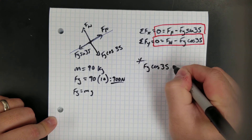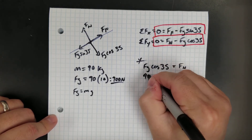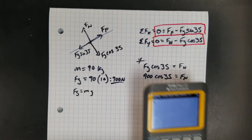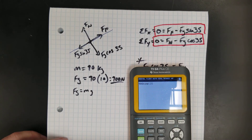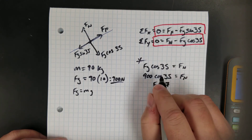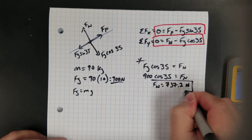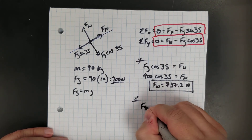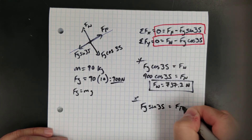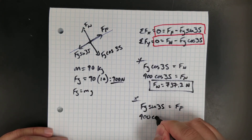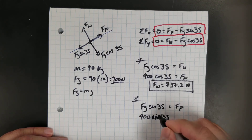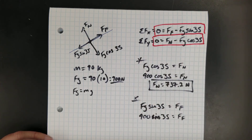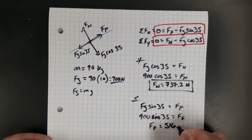The skier's mass is 90 kilograms. So FG is 90 times 10, equaling 900 newtons. Let's do the Y equation first. Rearranging gives FG cosine 35 equals FN. So 900 cosine 35 equals FN. Doing that on the calculator: 900 cosine 35 equals 737.23, so the normal force is 737.2 newtons. Now for the X equation: FG sine 35 equals FF. So 900 sine 35 equals the friction force, which gives 516.2 newtons. My frictional force is 516.2 newtons.